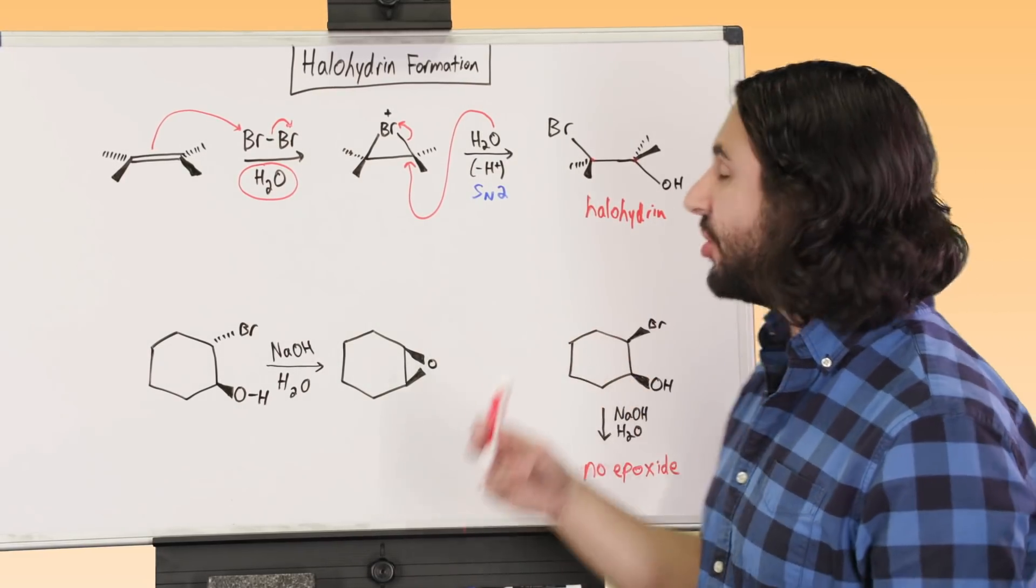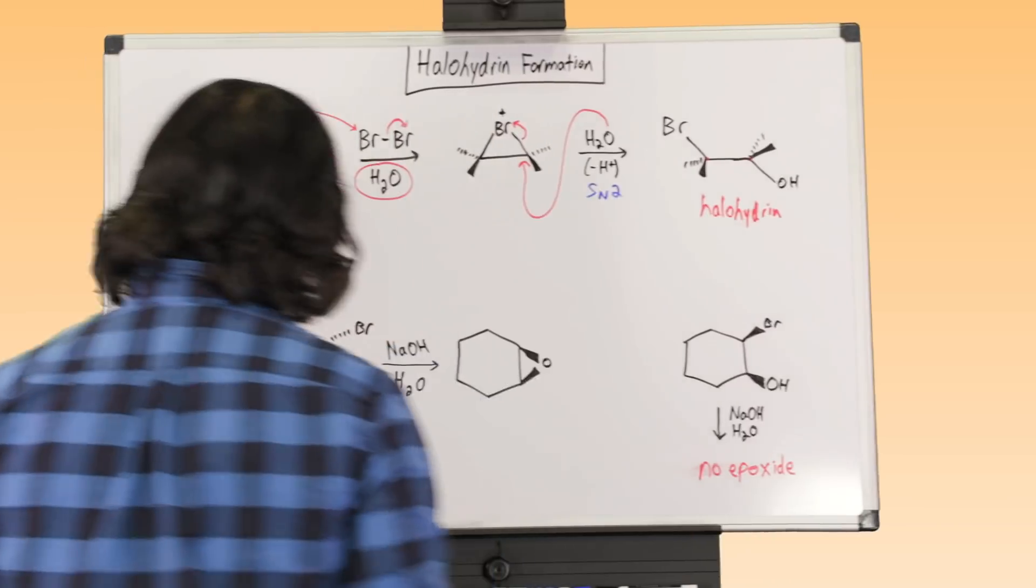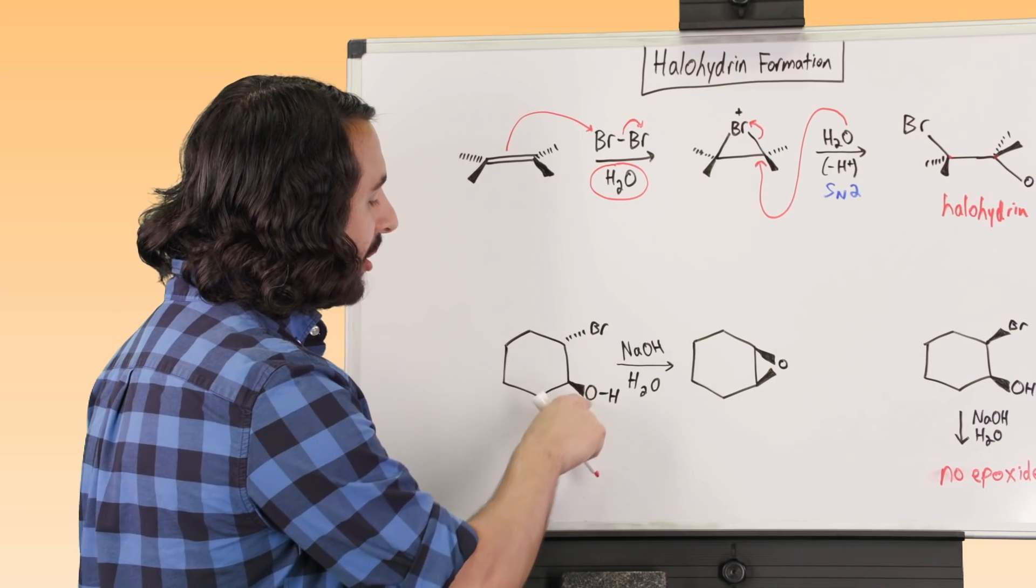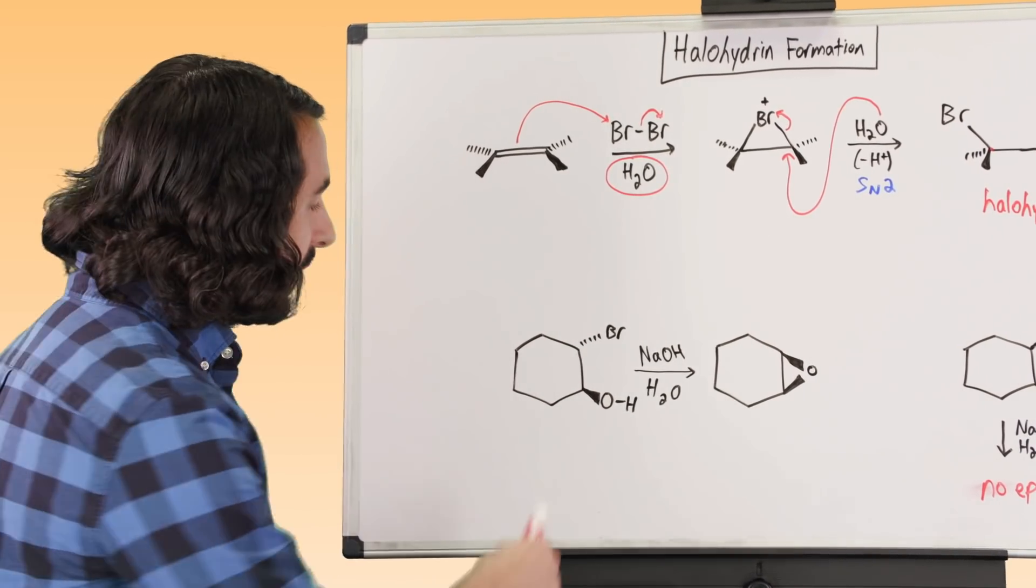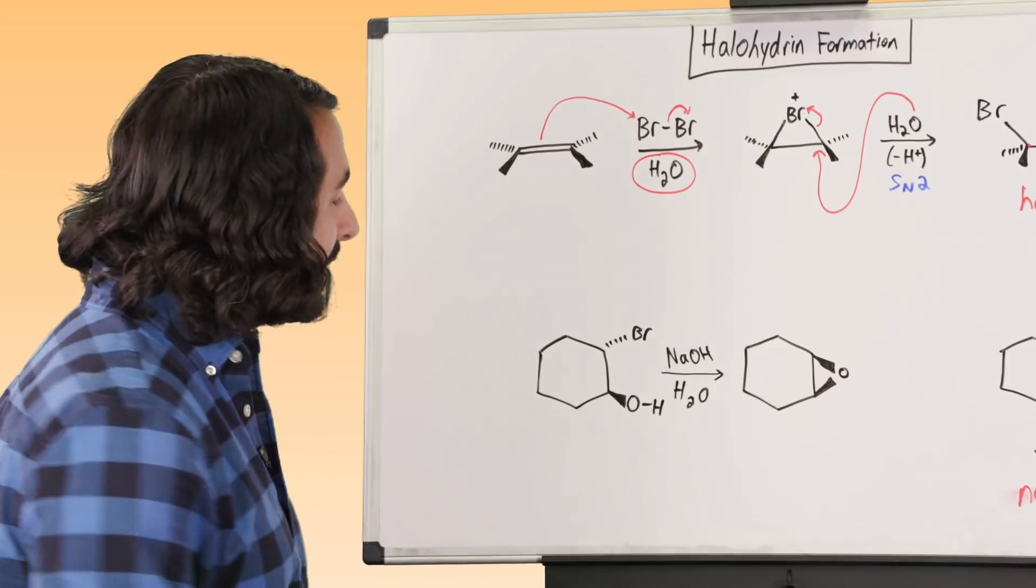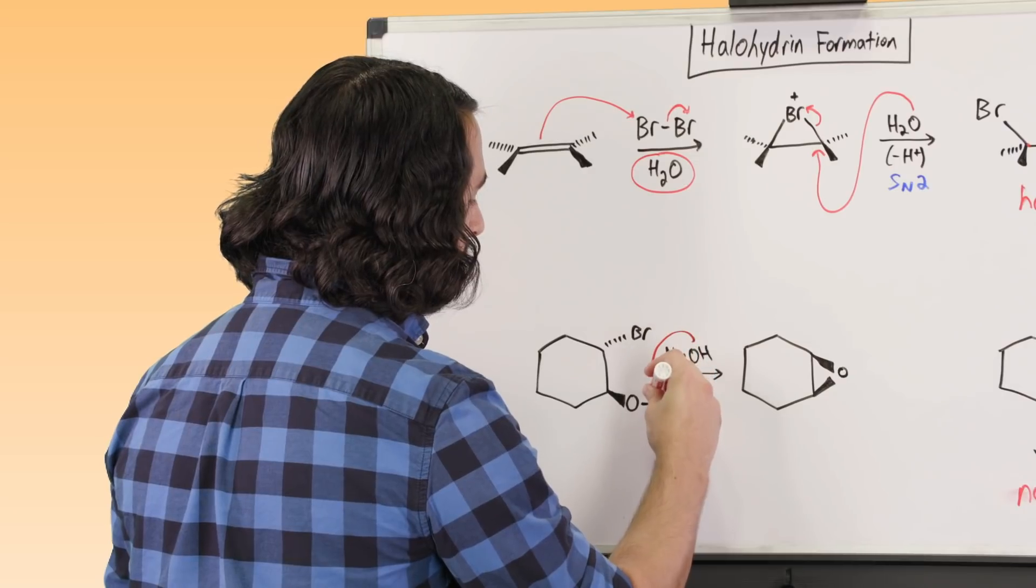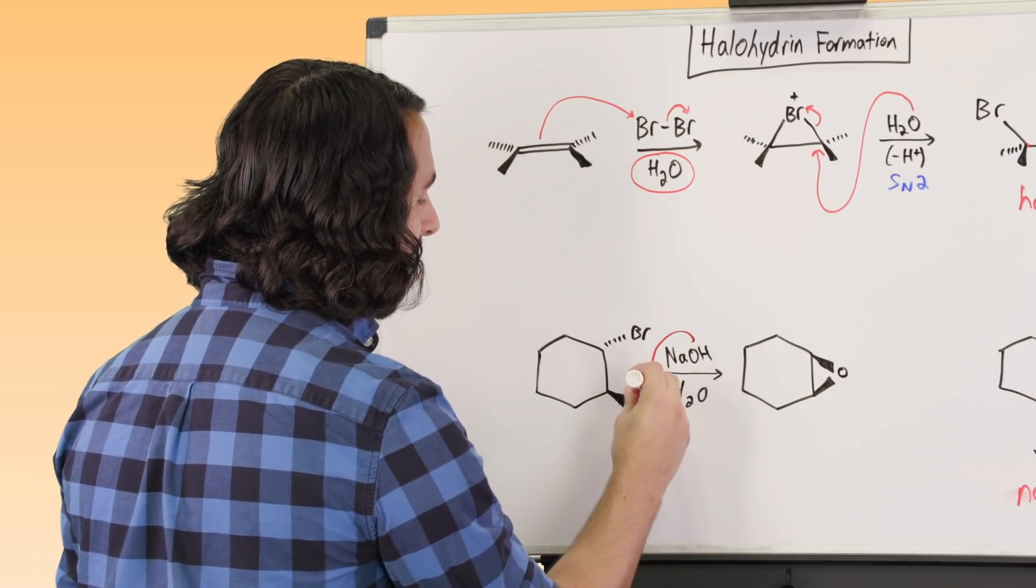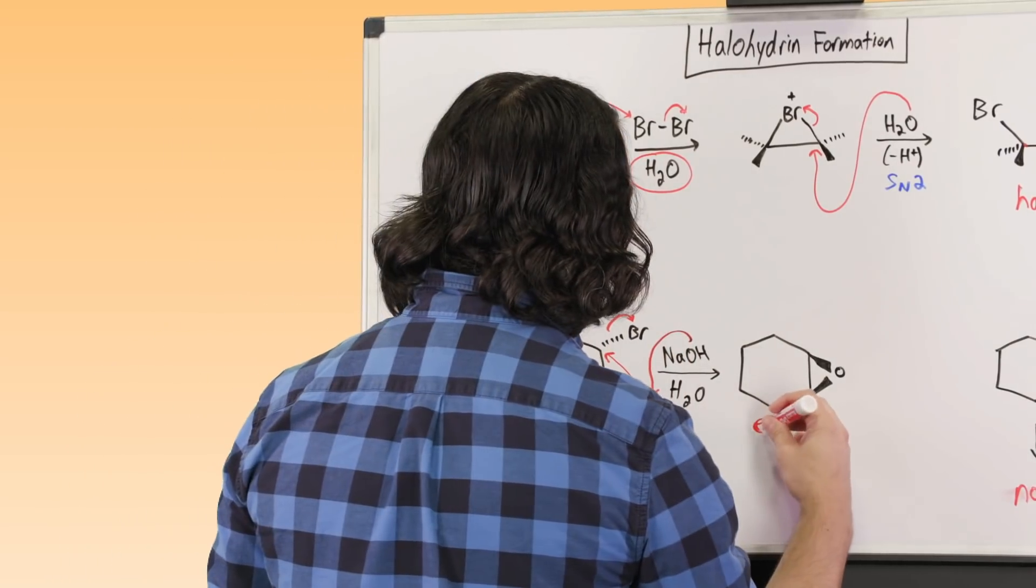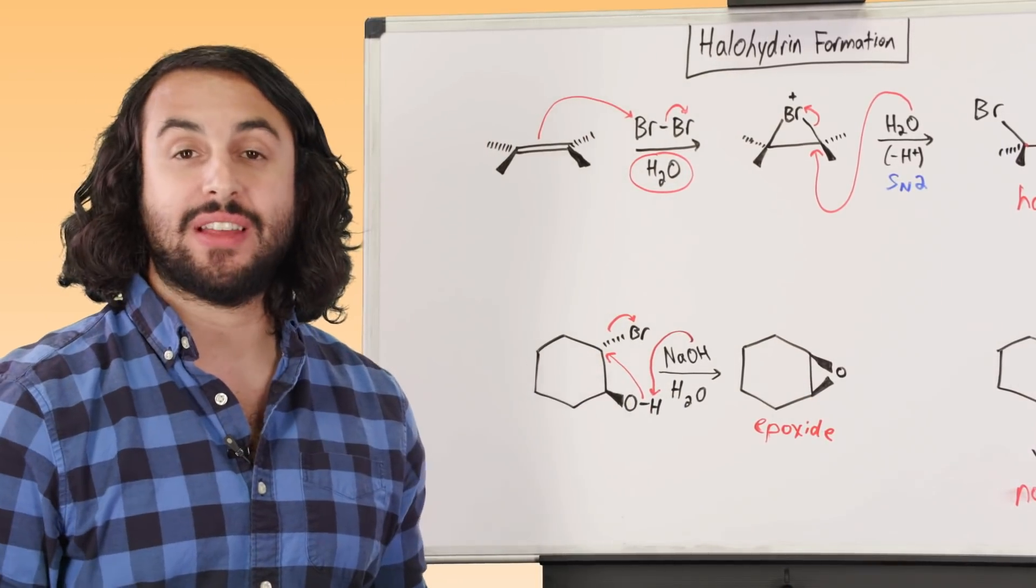So before we check out some other things about halohydrin formation, let's just look at one thing that halohydrins can do. And so let's say we have this cyclic halohydrin, and we have the halogen and the hydroxyl trans to one another on the ring. So we've got the dash and the wedge. If we put this in aqueous base, aqueous base, so hydroxide let's say, what this can do is this can actually grab this proton right here, and then these electrons can go ahead and do an SN2 and kick off that bromine, and we're going to get an epoxide.